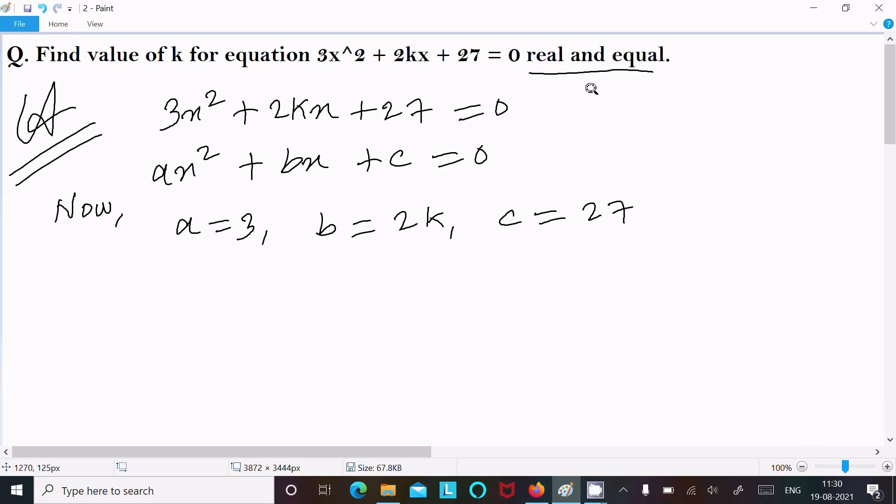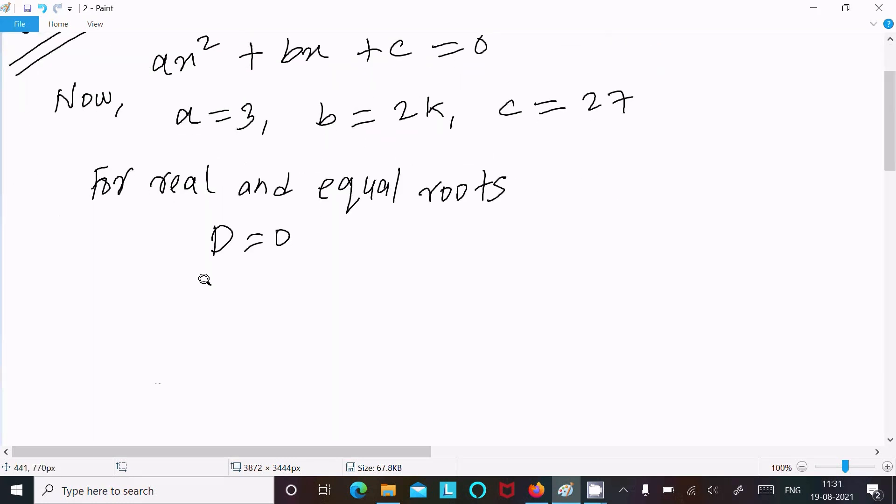For real and equal roots, discriminant D = 0. Now putting the formula of D, that is b² - 4ac = 0. So b value is 2k.